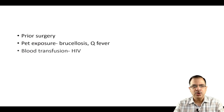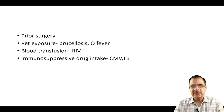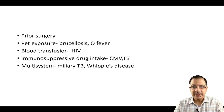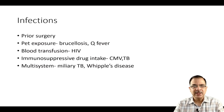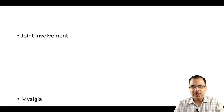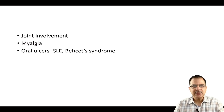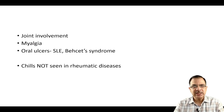Blood transfusion history raises the possibility of HIV, tuberculosis, or cytomegalovirus. When multi-system involvement is present, suspect viral disease and miliary tuberculosis as infectious causes of fever of unknown origin. Joint pains, myalgia, and oral ulcers are suggestive of rheumatic diseases like SLE. Characteristically, chills are not present in rheumatic diseases.